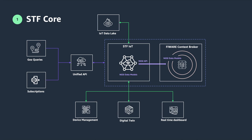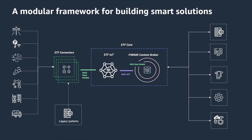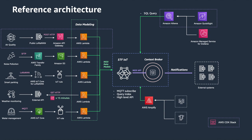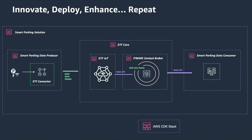It also consists of an IoT data lake built on Amazon S3 that you can use to store, query and generate insights from your IoT data. Once the core is deployed, it's easy to integrate data producers, whether they are sensors, new applications or legacy systems, and same for data consumers. The STF Core offers multiple ways to consume the data — directly from the Context Broker, from the STF IoT registry, or from the STF IoT data lake. You can also subscribe to all changes in your data, making it easy to build real time applications, and create subscriptions to notify independent systems. You can combine all these capabilities to build comprehensive and scalable solutions easily.